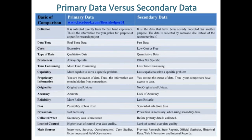Thus, the information is hidden from competitors. While in proprietary information of secondary data, you are not the owner of the data. Thus, your competitors have access to the data. The originality of primary data is original and unique while the originality of secondary data is not original and unique.